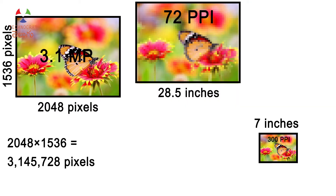We have 1536 pixels vertical and 2048 pixels horizontal. We multiply horizontal by vertical and we have 3,145,728 pixels — that is a 3.1 megapixel image. At 72 PPI resolution for paper print, we have a 28.5-inch wide paper. At 300 PPI resolution for image print, we have a 7-inch wide paper. The resolution determines the same image printed at different sizes, with different clarity.